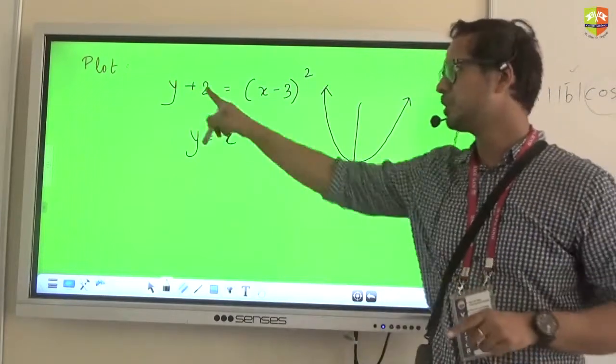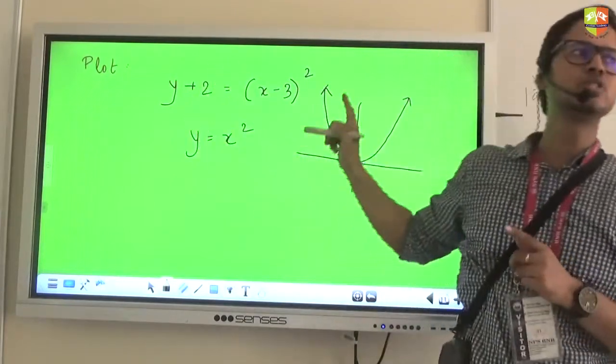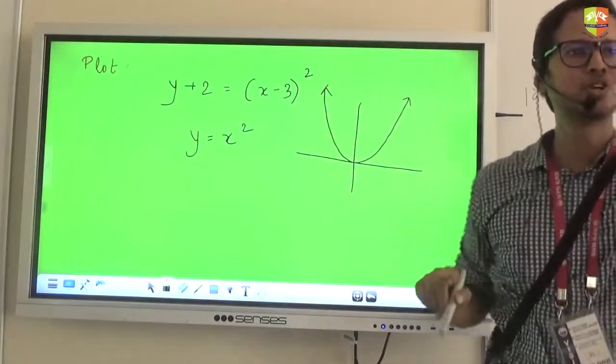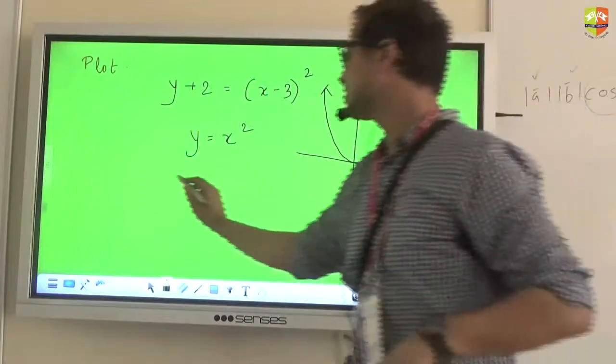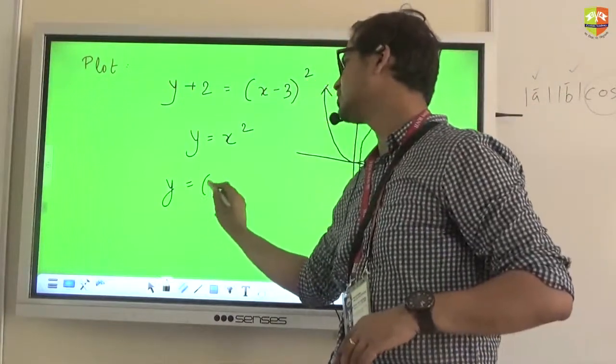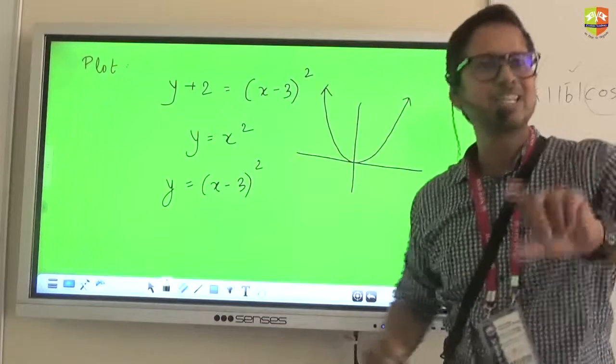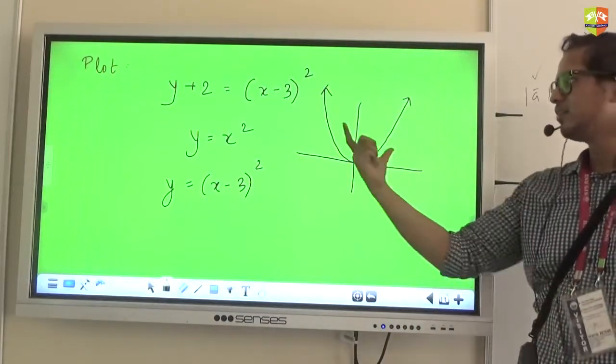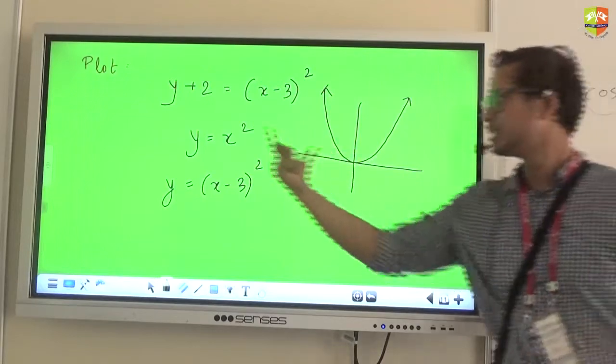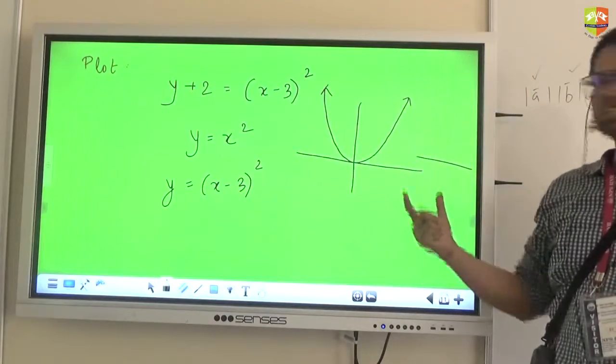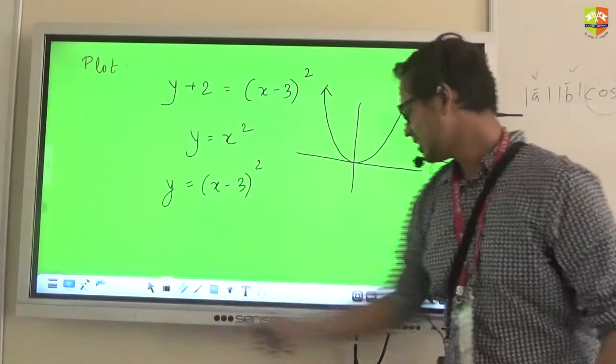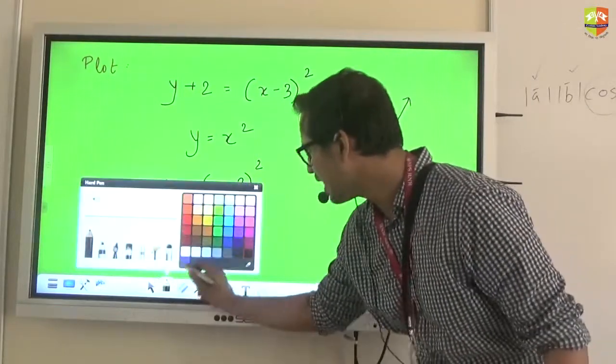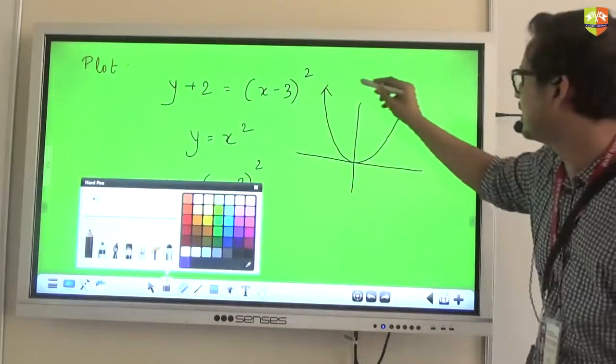Now go step by step. First, do you want to replace y with y plus 2, or you want to change x with x minus 3? Your call. Krishna, what's your call? Krishna says let's do the transformation on x first. So he is replacing x with x minus 3. According to Krishna, where should this graph go? 3 units to the right. So the graph will now look like this, I am drawing it in different colors so you can relate to it.